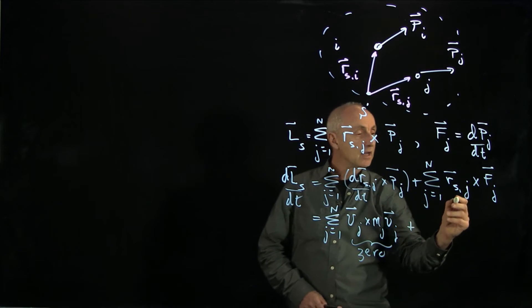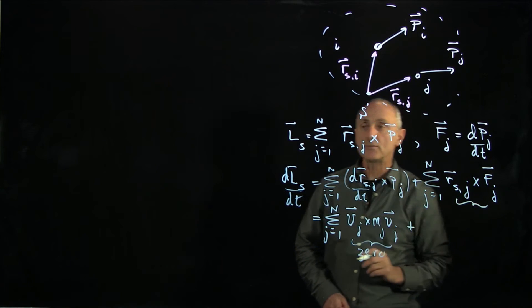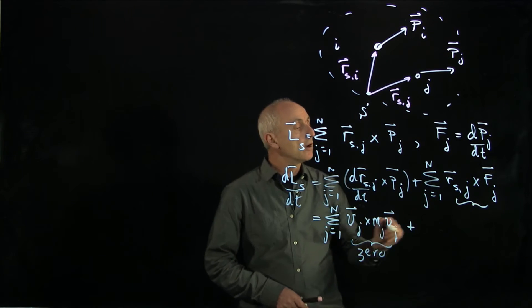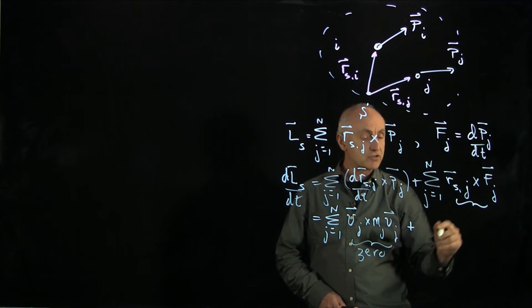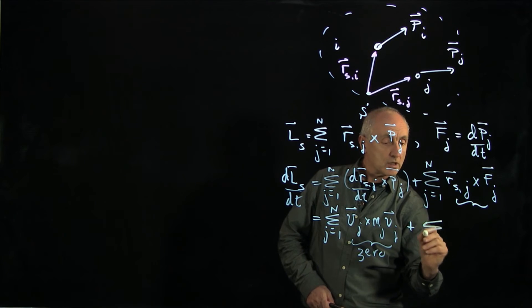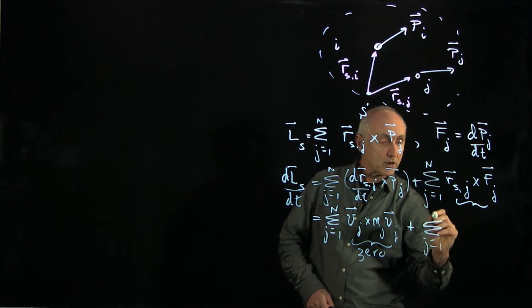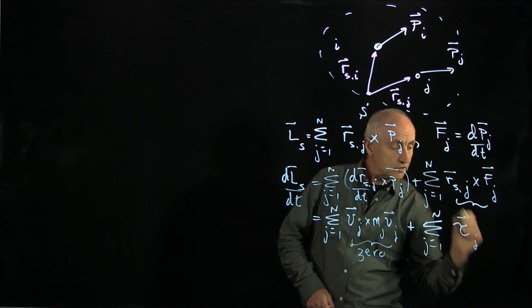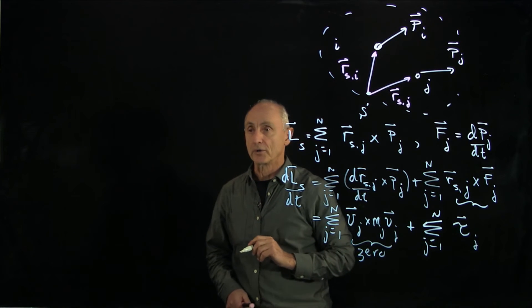And this piece in here, now we have to be a little bit careful, but rsj cross fj is the torque on the j-th particle. So that is the torque on the j-th particle.